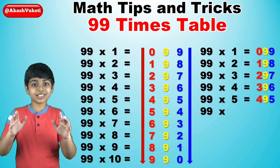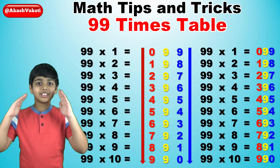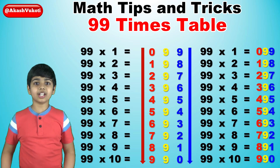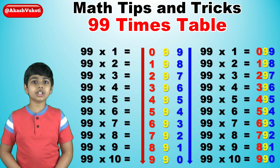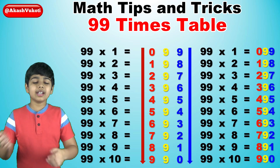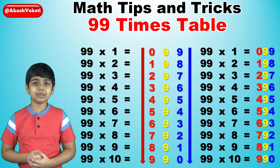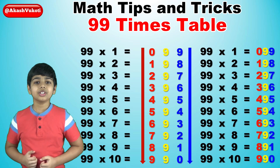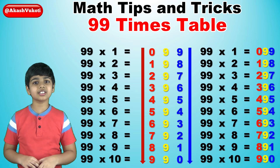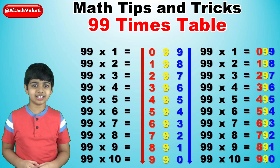And there you have it — that is literally the 99 times table. I'm not joking, it's that simple. It's literally just the leftmost column 0 to 9 in ascending order, the middle column just 9s, and the rightmost column 9 to 0 in descending order. And that is the 99 times table trick. Now you know how to do it, so you can learn it and just absolutely master the 99 times table.